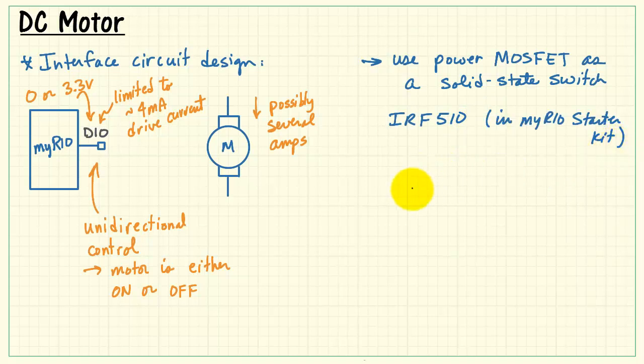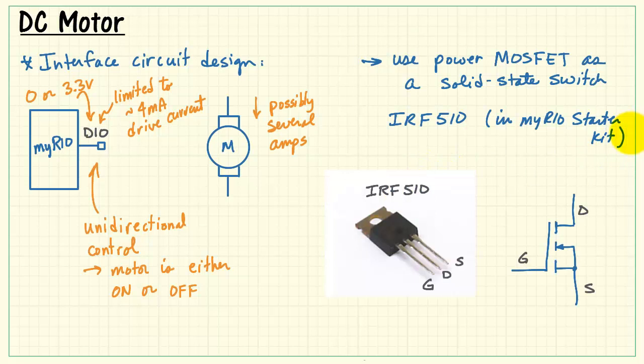We'll be using the IRF510 in the MyRio starter kit. Here's a picture of the device itself. You can see the gate, drain, and source connections, and here's the schematic symbol for this device.